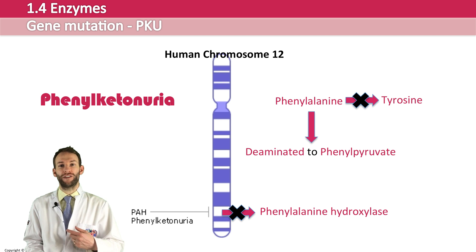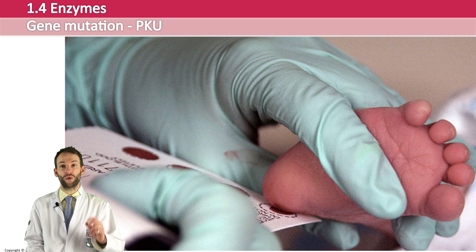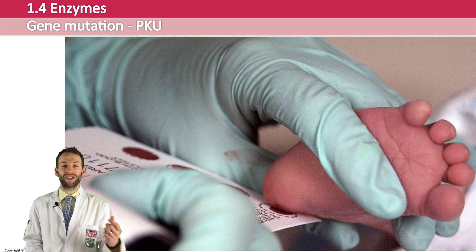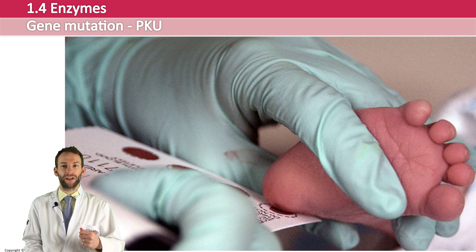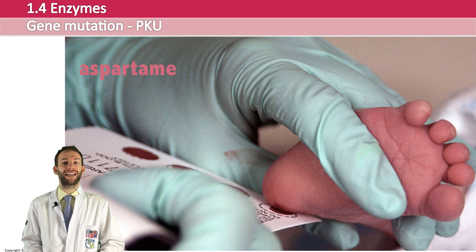The phenylalanine actually becomes deaminated to phenylpyruvate, which can cause really serious and irreversible brain damage. But because we've discovered this, there is a simple test done on all babies in the UK since about the 1960s — a heel prick test — where a small blood sample is taken and tested for PKU. If you have it as a baby, you just need a specific diet that is low in protein and especially aspartame, which is a sweetener containing lots of phenylalanine. Avoiding that keeps phenylalanine low and you can live a very healthy life.